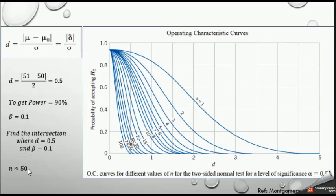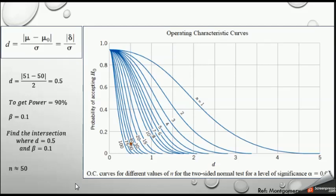Now for the second question: how much should we increase the sample size to get beta equal to 0.1, giving a power of 90%? We keep d = 0.5 and find where beta = 0.1 on the y-axis — 0.1 is exactly in the middle between 0 and 0.2. Finding the intersection between beta = 0.1 and d = 0.5, we read off the corresponding sample size curve, which gives approximately n = 50. So by increasing the sample size from 25 to 50, beta is lowered from 0.3 to 0.1, and the power of the test improves from 70% to 90%.